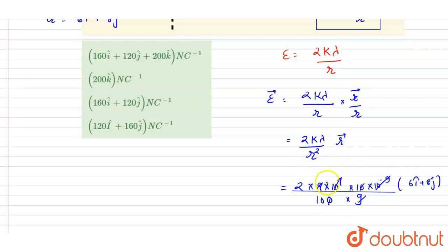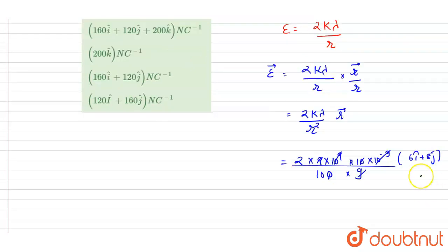Now if you see, we took this r in centimeter, so we have to divide by 100 to convert it into meters, times (6î + 8ĵ).